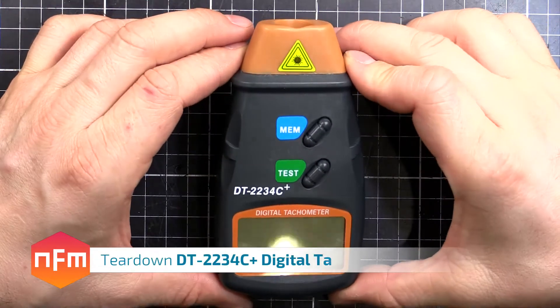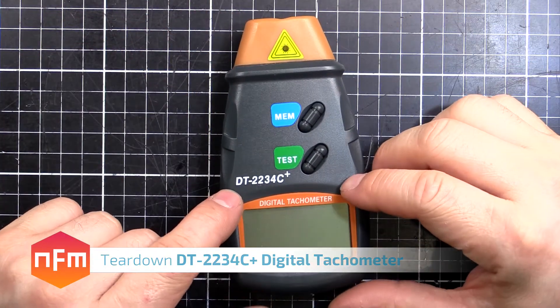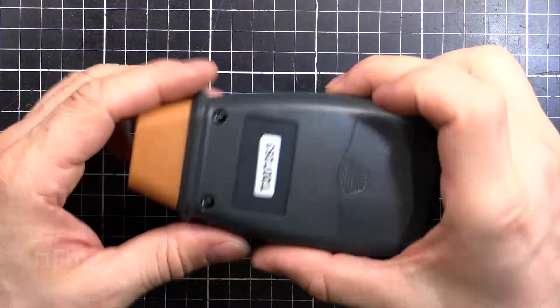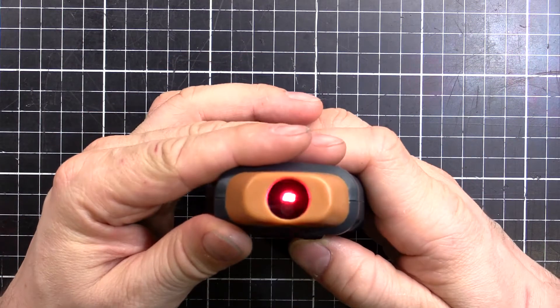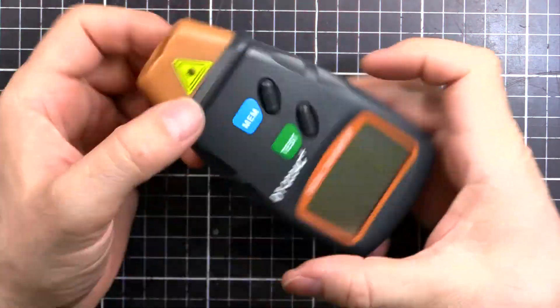Hey guys, we're back with another eBay doohickey. This is a digital tachometer model number DT-2234C plus, just the cheapest one I could find. It's a little laser-based tachometer, you can do the whole sniper thing.